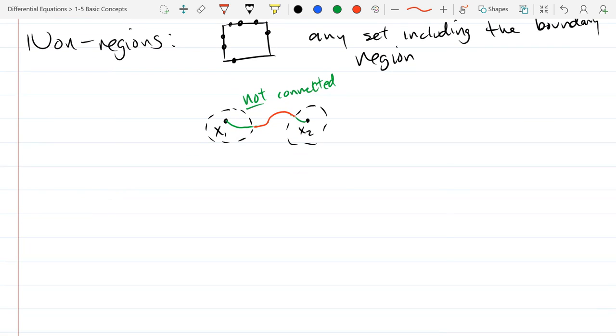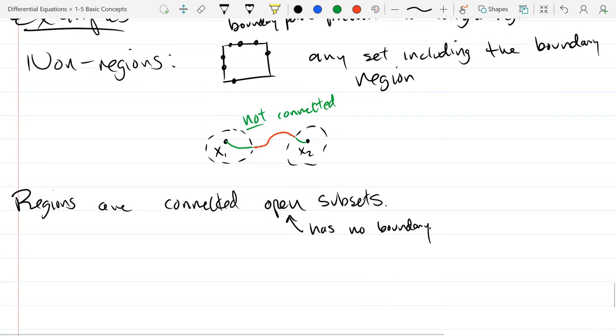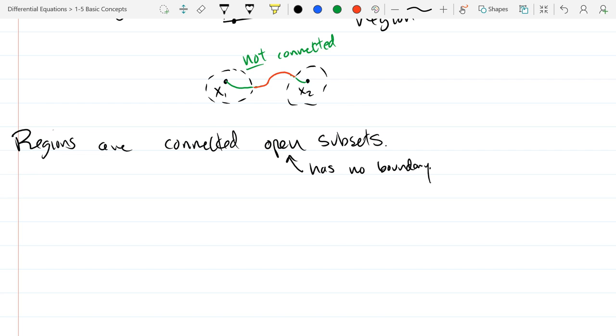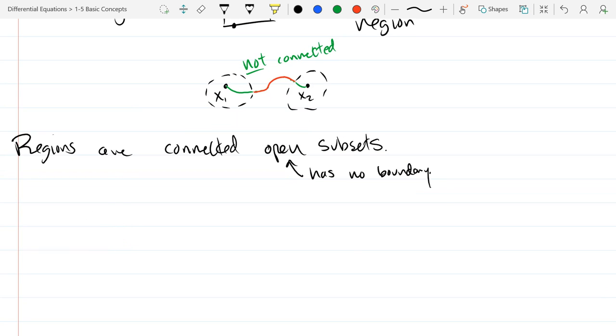So those are non-regions. So regions are basically connected open subsets. And I don't want to give a whole lesson on boundary and open and interior points. So we'll just, I think, stick with this level of explanation for now.